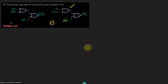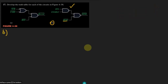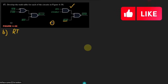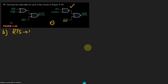Let me represent them with some other variables in order to simplify our question. This is part B of our question — let me call RTS equal to A, enable equal to B, and BG equal to C.